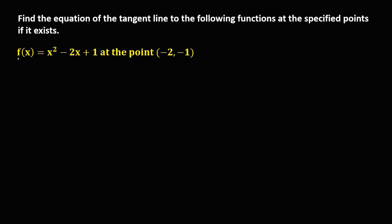For the second problem, we again need to find the derivative of the given function. Using the rule of derivative, we multiply the exponent by its numerical coefficient. There is an imaginary 1, so 1 times 2 is 2, then x to the power of 2 minus 1, which equals 1. So the derivative of x² is 2x. Then the derivative of 2x — we drop the x — is 2. The derivative of a constant is 0, so the derivative is 2x minus 2.